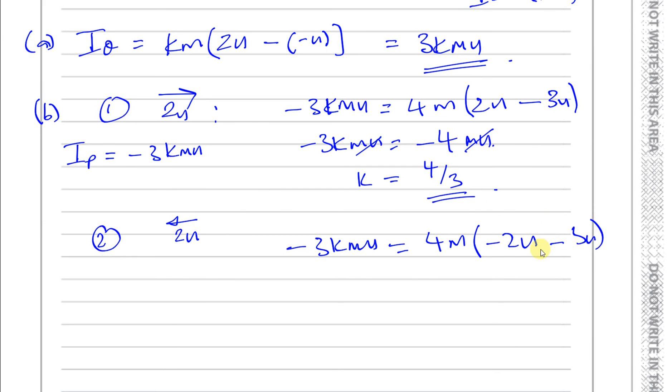You have minus 3KMU is equal to 4 times minus 5, which is minus 20MU. We can get rid of the MUs. So we've got K is equal to minus 20 over minus 3, which is 20 over 3. So those are the two possible values of K.